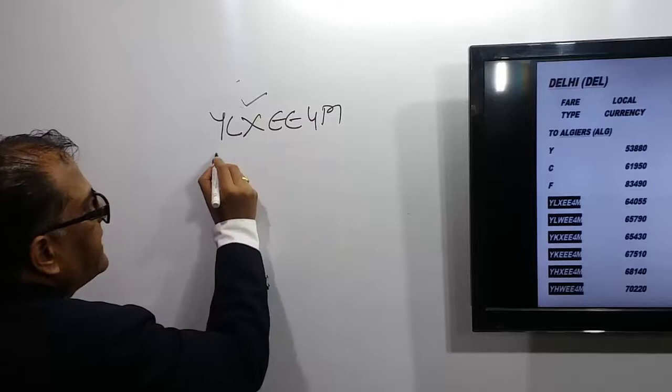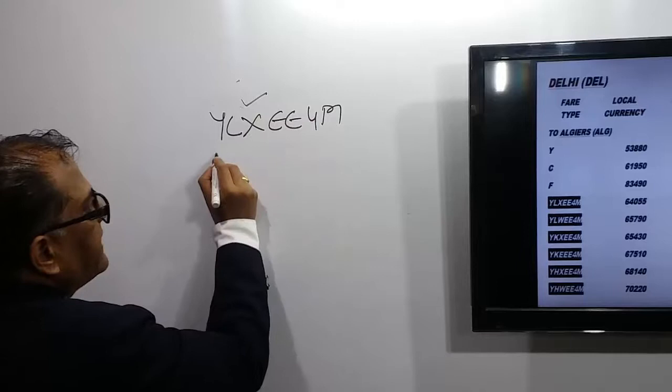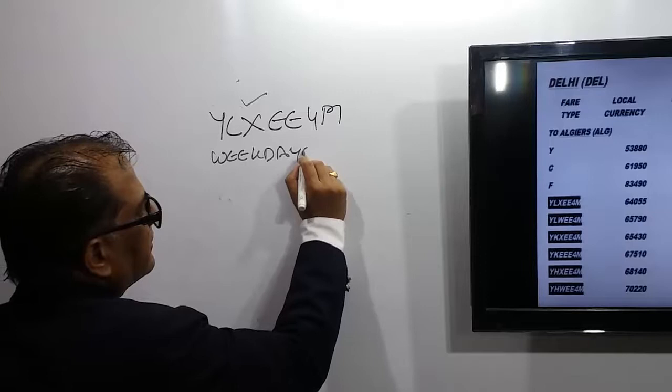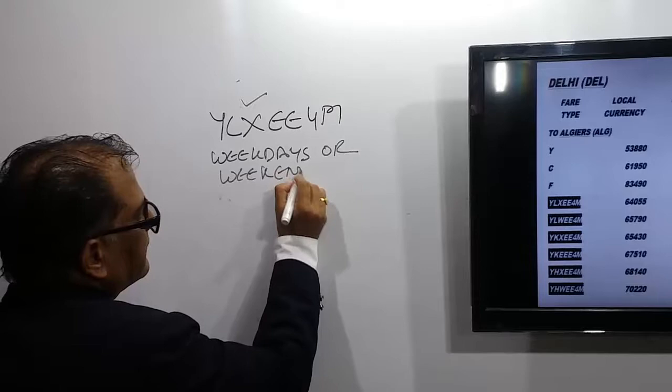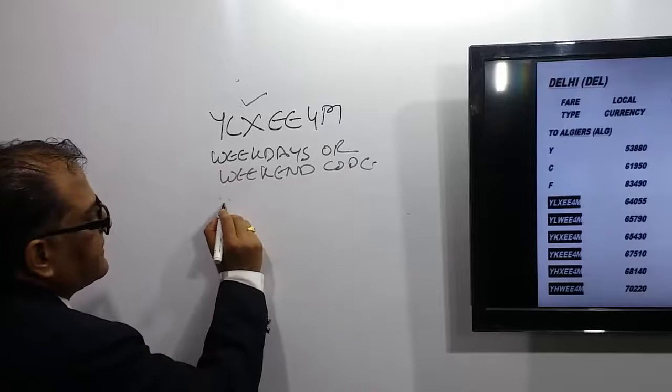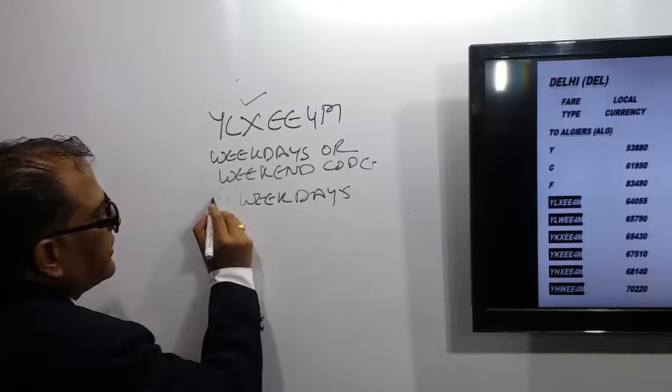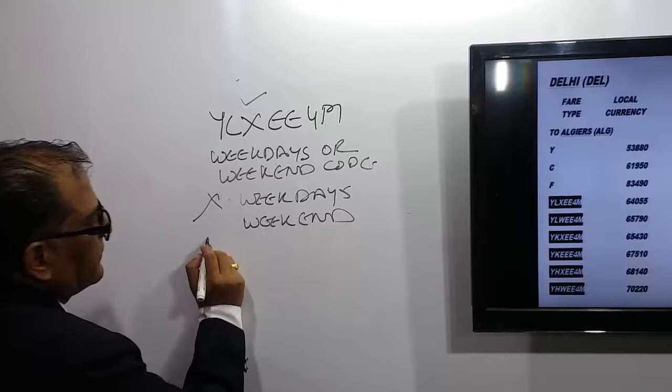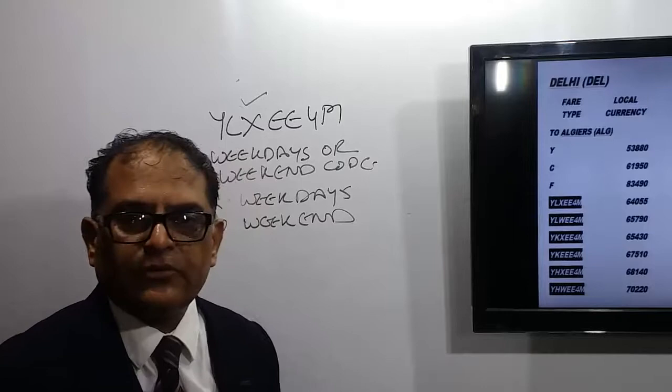Next we have the weekday or weekend code. For weekdays we use the code X, and for weekends we use the code W.